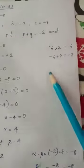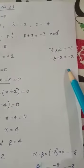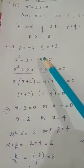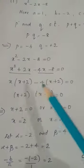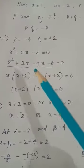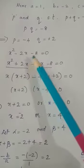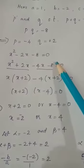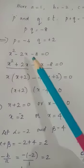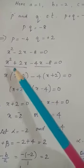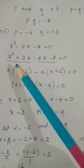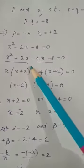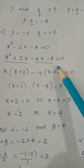So minus 4 into 2 is minus 8, and minus 4 plus 2 is minus 2. So we take p equal to minus 4 and q equal to 2. Using the splitting the middle term method, we write x squared minus 2x minus 8 equals 0, and rewrite minus 2x as plus 2x minus 4x.